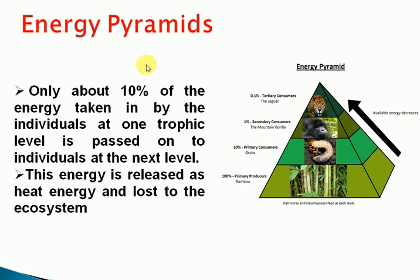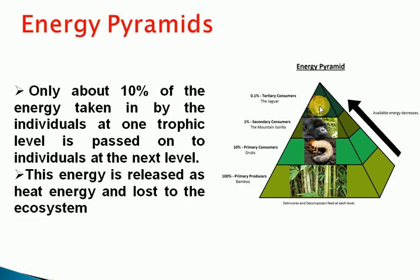The first type is Energy Pyramids. Producers have a large biomass and large populations. As consumers move to the next level, energy transfer decreases — only about 10% of energy taken by individuals at one trophic level is passed on to individuals at the next trophic level.